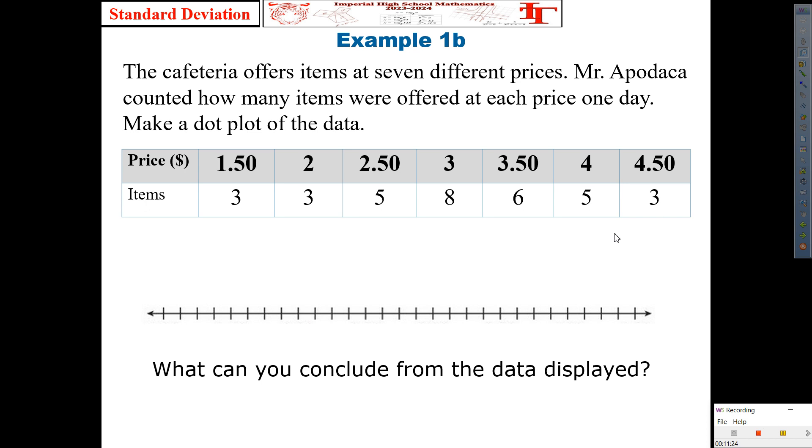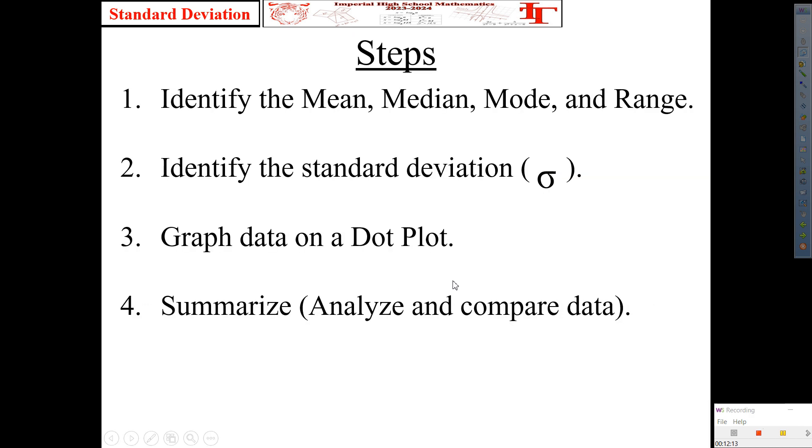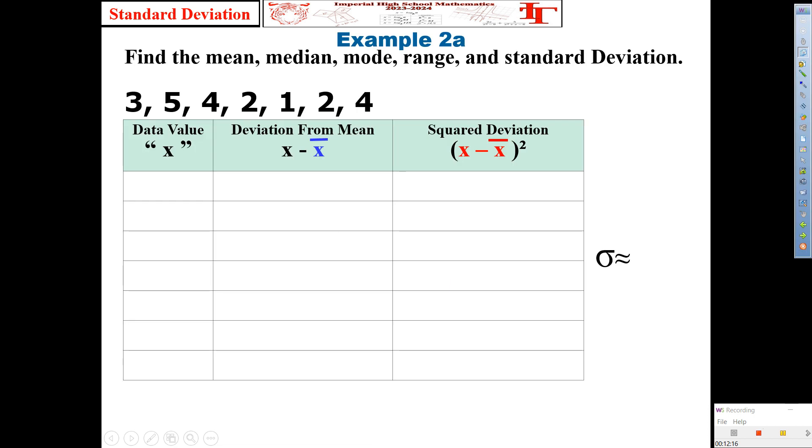This next part, like I said, is one of the concepts that give people a hard time. But, like I said, I'm only going to give you a portion today so that it's easy to transfer. That's why I gave you plenty of practice of the other things that we did. So, copy this problem on your paper, please. Example number 2. 2A. It reads, find the mean, median, mode, range, and standard deviation of 3, 5, 4, 2, 1, 2, 4, and copy that table. I'll give you one minute to copy. Go.